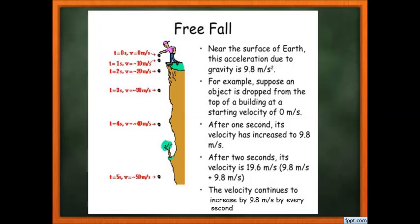Near Earth's surface, acceleration due to gravity is 9.8 m/s². For example, an object dropped from a building with initial velocity 0: after 2 seconds, velocity = 9.8 + 9.8 = 19.6 m/s. The velocity continues to increase by 9.8 m/s every second — equal amounts in equal intervals of time — so this is uniform acceleration.